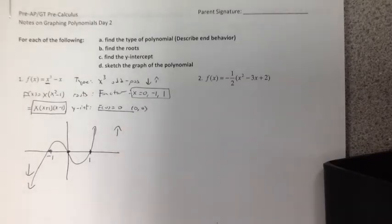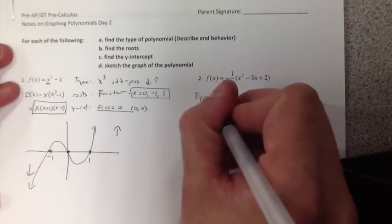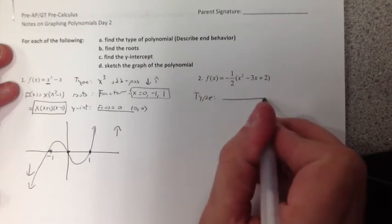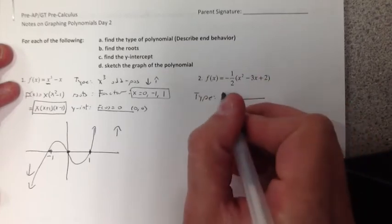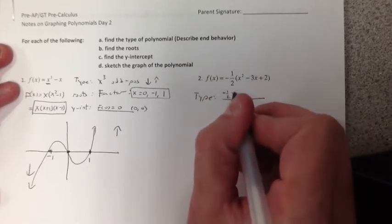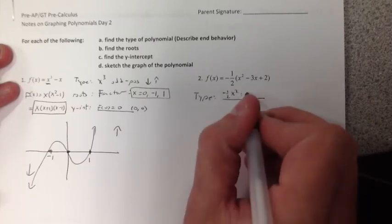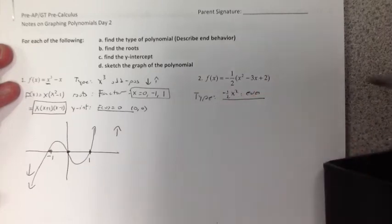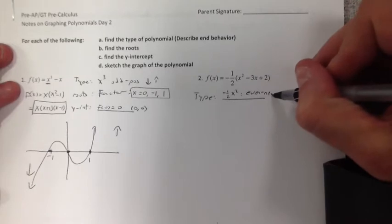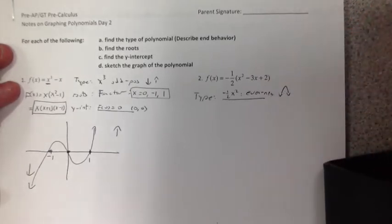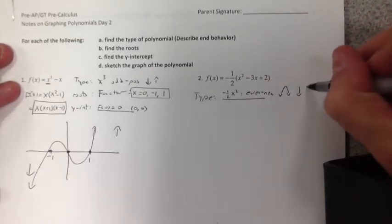Now, number 2. Let's go and find the type. Very easy to do. I do have to consider the negative ½ though this time. And that's x². So this is an even negative. So it's going to look like an upside-down parabola in the end. So it starts down, ends down.